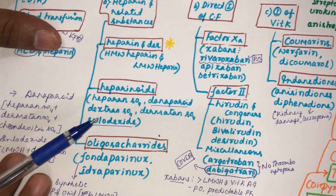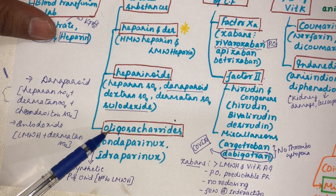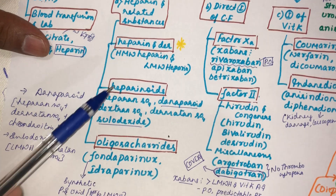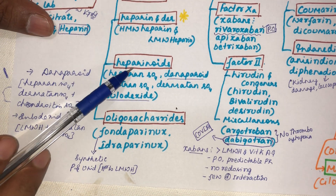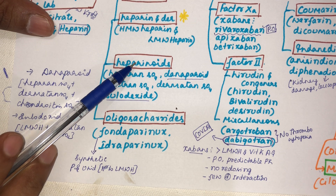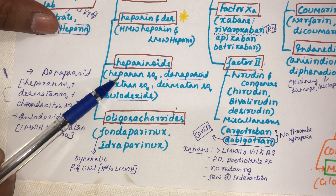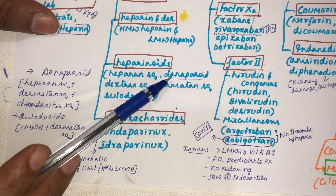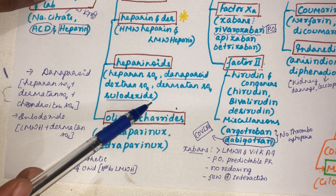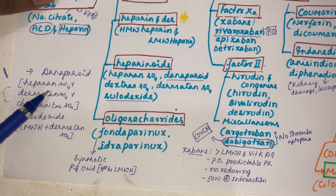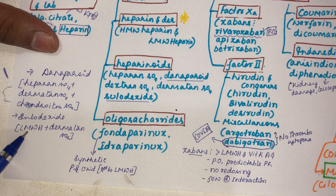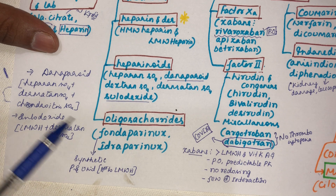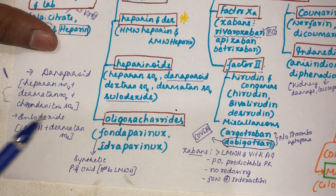Heparinoids are similar in action to heparin and contain heparin sulfate. Examples include danaparoid — which contains heparin sulfate, dermatan sulfate, and chondroitin sulfate — and sulodexide, which is a combination of low molecular weight heparin plus dermatan sulfate.